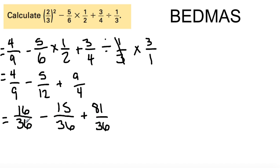So we start off 16 minus 15 is 1. We don't have to write that down. So 16 minus 15 is 1. 1 plus 81 is 82. 82 over 36. Now, we've got a problem here. That's an improper fraction. So we've got to make that a mixed number.